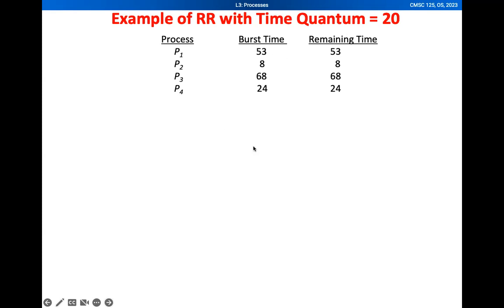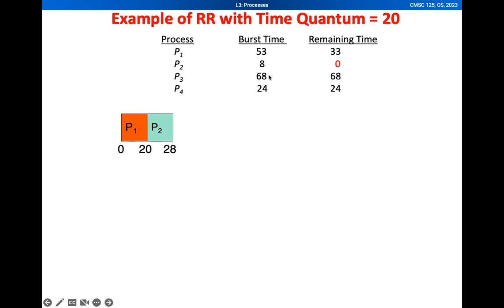Now let us begin by visualizing how these processes will be executed under Round Robin. Since P1 has arrived first, it will be executed for 20 milliseconds, and the remaining time would be 53 minus 20, so 33 milliseconds. After P1, P2 will be executed. P2 is also given 20 milliseconds, but since it has a burst time of only 8, it completes at the 28th millisecond and the remaining time is zero. So we remove P2 from the queue since it is done.